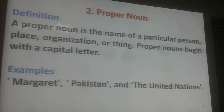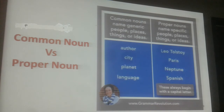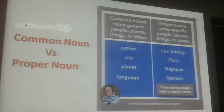A proper noun is the name of a particular person, place, organization or thing. Proper noun begins with a capital letter. For example: Margaret, Pakistan, the United Nations. Common Noun versus Proper Noun: Author, city, planet and language are common nouns, whereas Leo Tolstoy, Paris, Neptune and Spanish are proper nouns.